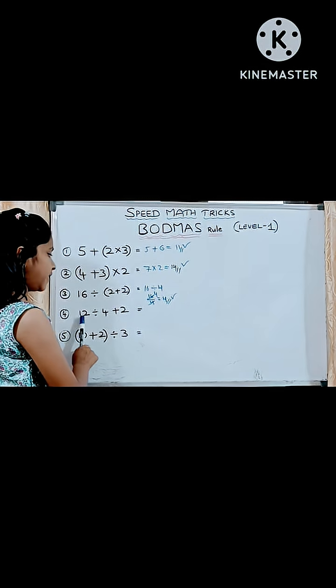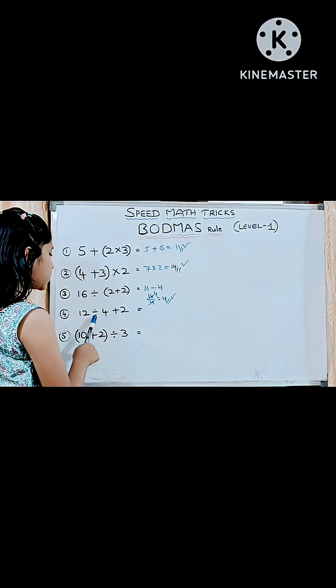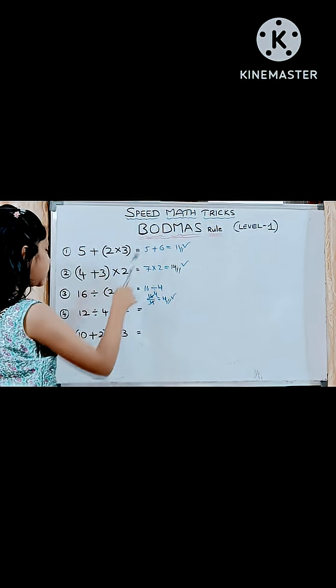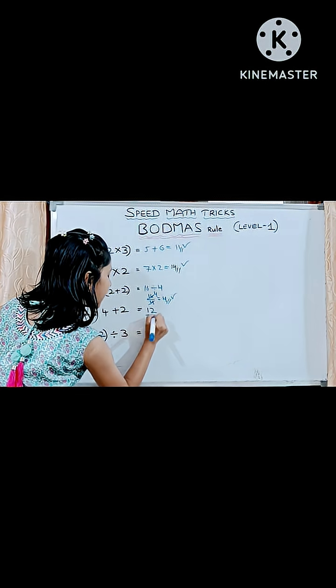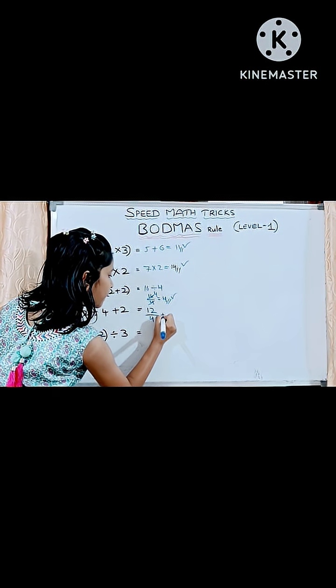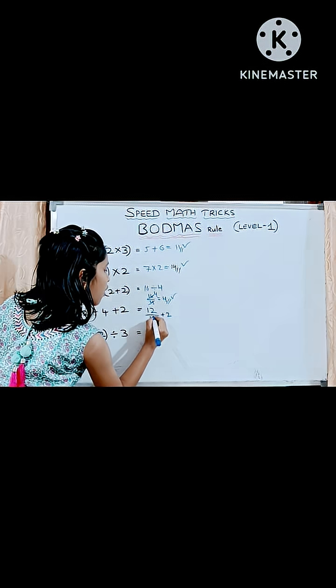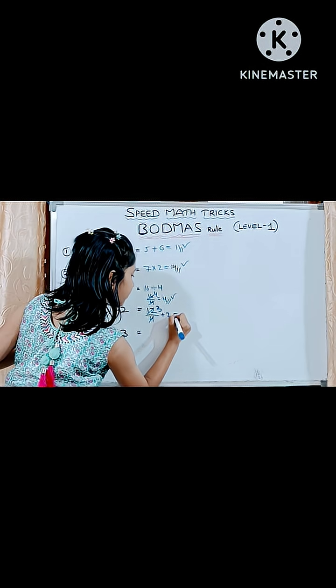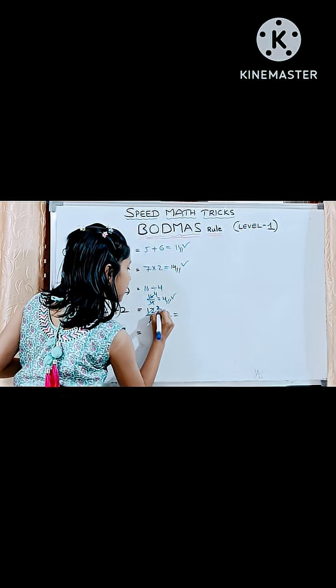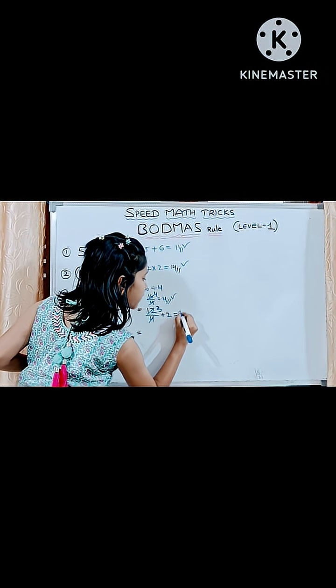In this fourth question, there is no bracket. So, first we should simplify division, then addition. 12 by 4 plus 2 is 5. 12 divided by 4 is 3, 3 plus 2 is 5.